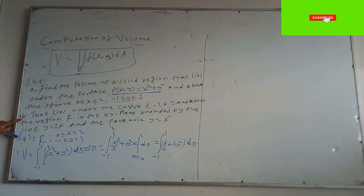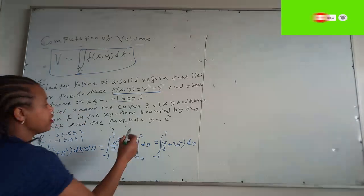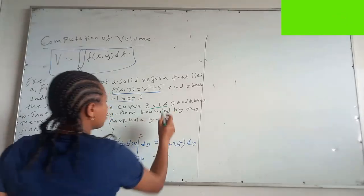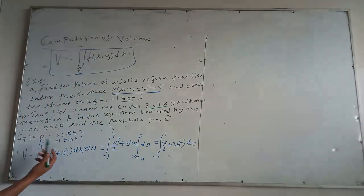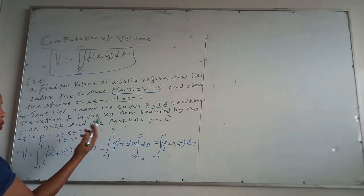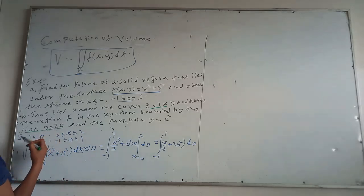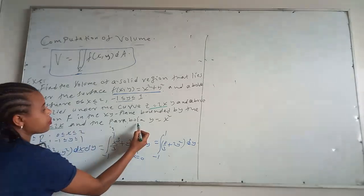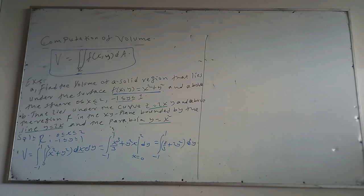Find the volume of a solid region under the curve z = xy, above the region in the xy-plane bounded by the line y = x and the parabola y = x squared.